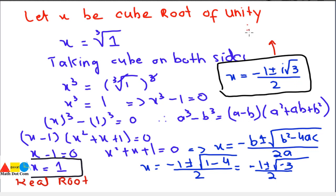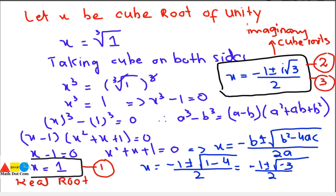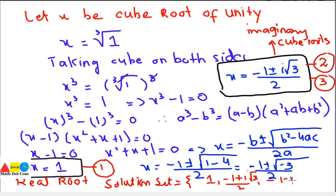These are the imaginary cube roots. In total we have three cube roots of unity: 1, minus 1 plus iota under root 3 divided by 2, and minus 1 minus iota under root 3 divided by 2. These roots are very important and hold very important properties. In our next lecture we will discuss these roots and their properties, because of which the cube root of unity becomes a specific and important topic in mathematics. Thank you.